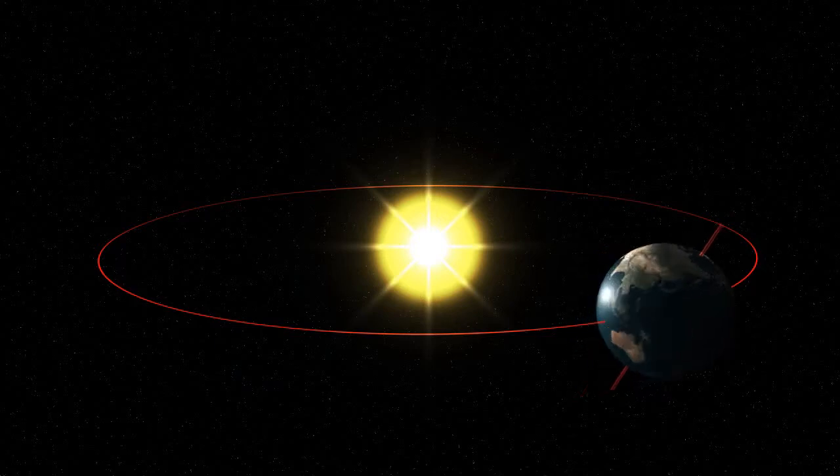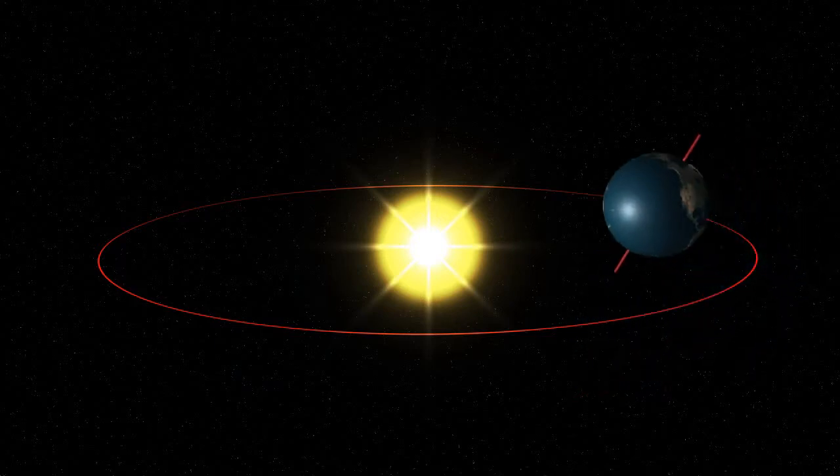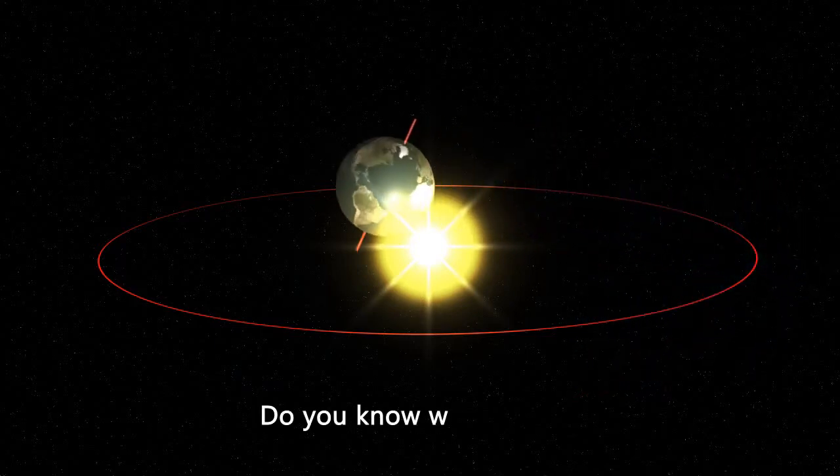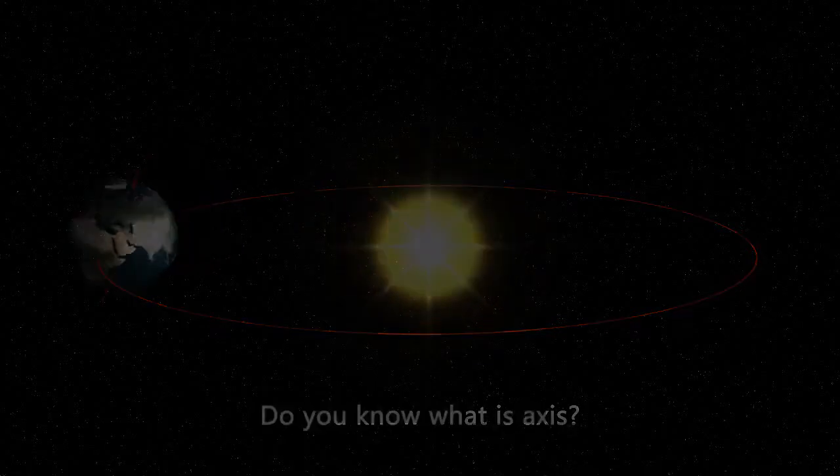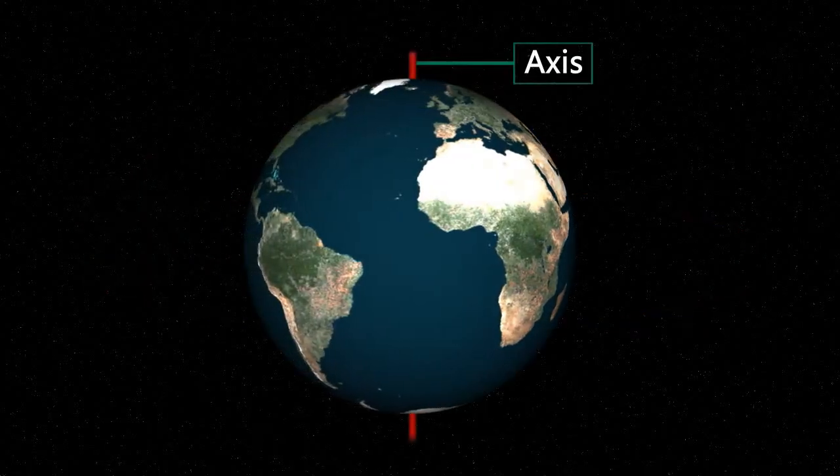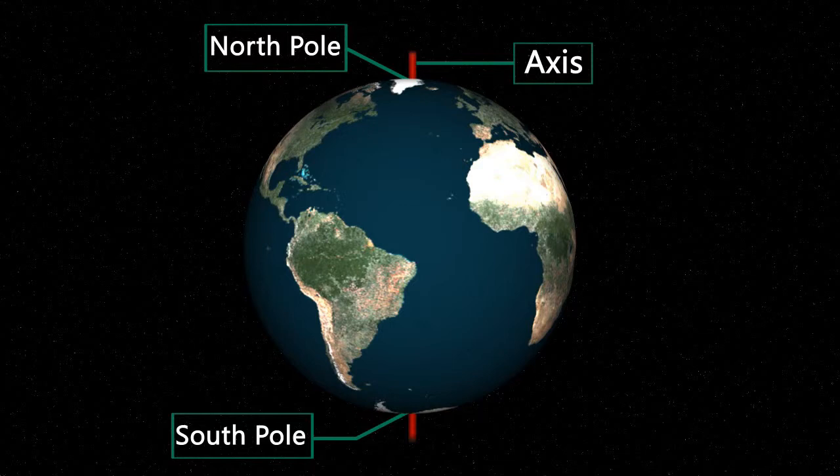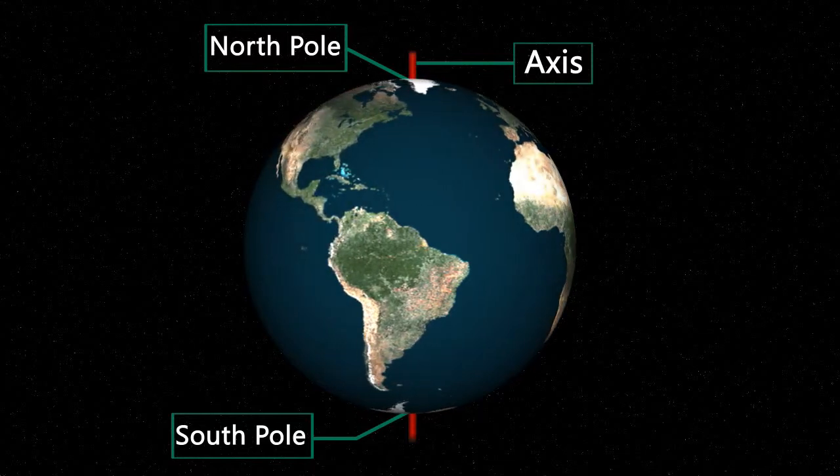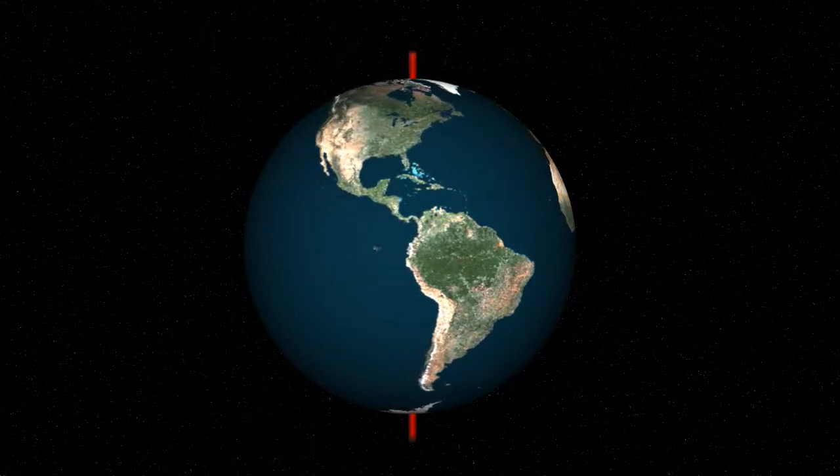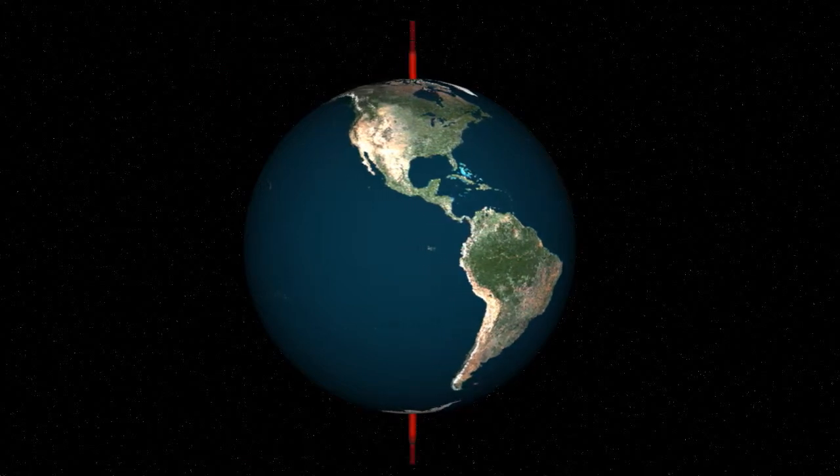While revolving around the Sun, it also rotates on its axis. Do you know what is axis? Axis is an imaginary straight line joining the two poles on which the Earth rotates. The axis of Earth is not straight; it is tilted at an angle.